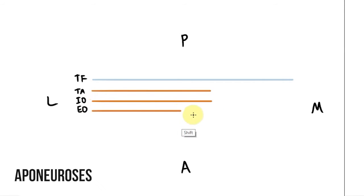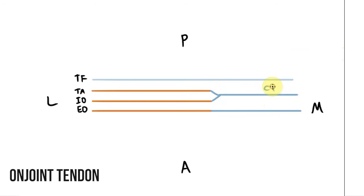All three of these layers appear laterally as muscle fibers, but as they head medially they form thin flat tendons known as aponeuroses. The tendon of external oblique just heads towards the midline as you'd expect, but the tendons of internal oblique and transversus abdominis come together to form a single strong structure known as the conjoint tendon.